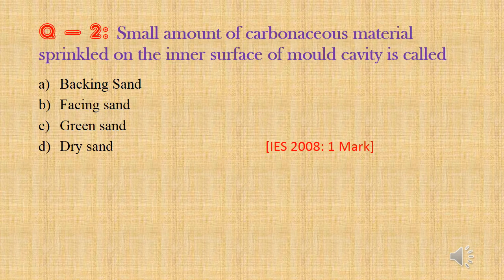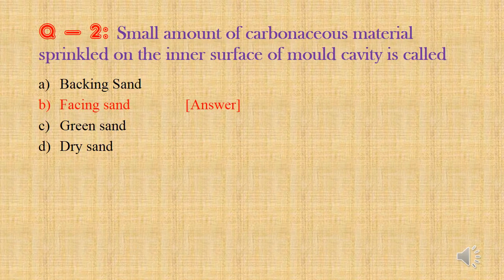Question 2: Small amount of carbonaceous material sprinkled on the inner surface of mold cavity is called — Option a: Packing sand, Option b: Facing sand, Option c: Green sand, Option d: Dry sand. Here, facing sand will be on the inner surface of the mold cavity which will have the carbonaceous material to prevent sand from overheating. So the answer is Option b: Facing sand.